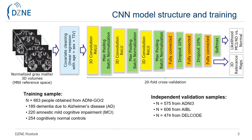As input data we used spatially normalized 3D gray matter maps derived from the MRI scans. Our neural network was implemented in Keras and TensorFlow. The model structure is based on the popular AlexNet model for 2D image classification.